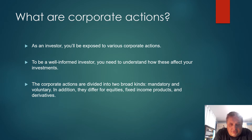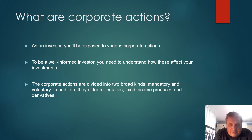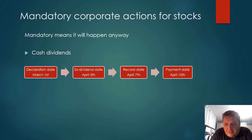Corporate actions are divided into two broad kinds: mandatory and voluntary. Mandatory means they will happen anyway — sometimes you have an option to choose among them, but they will happen. Voluntary means that you can opt out. In addition, there are corporate actions for equities, fixed income products such as bonds, and derivatives such as call and put options.